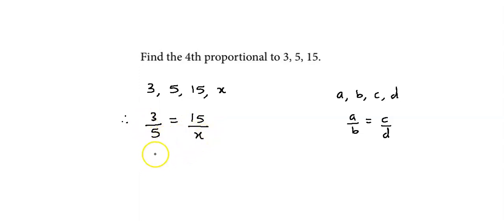Now let us cross multiply. 3x is equal to 5 times 15. So x comes 5 into 15 divided by 3.